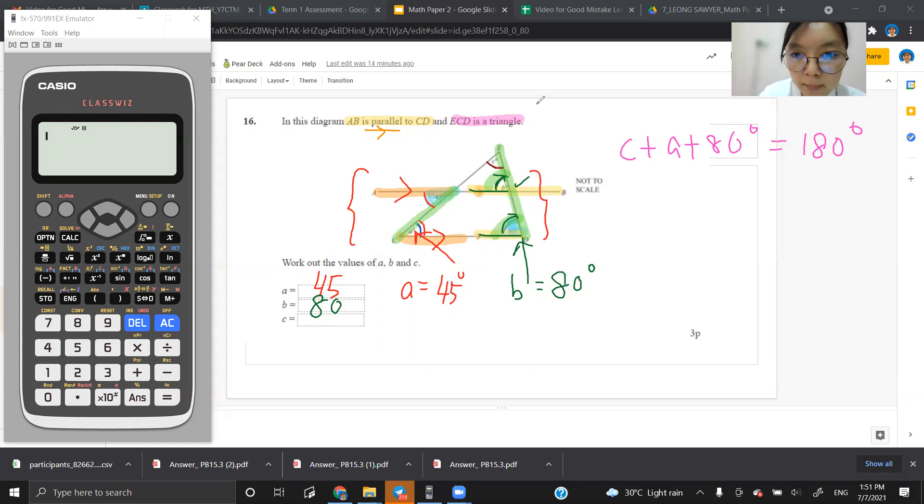So I know that my B here is 80, right? So this is already 80. And I also know that here is 45. Can you see?